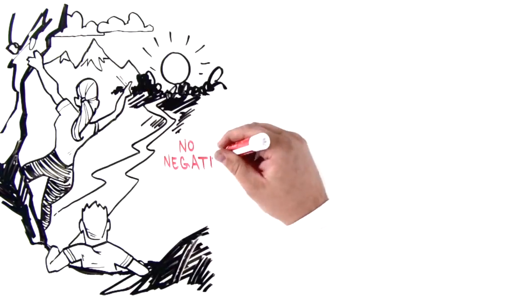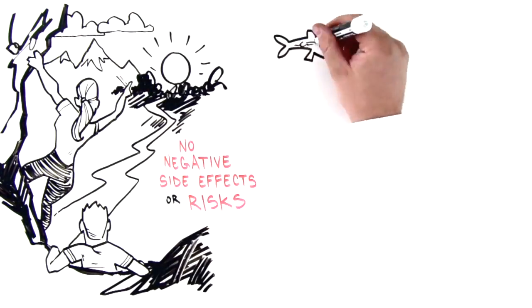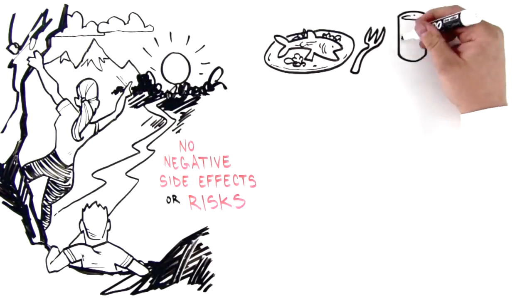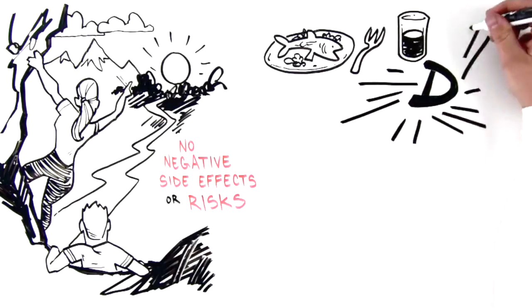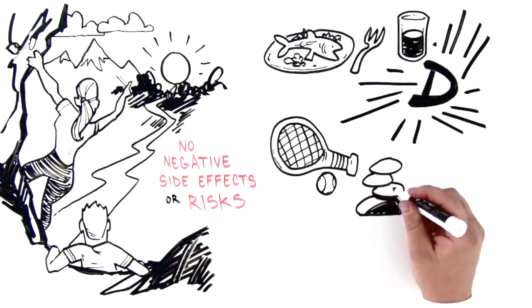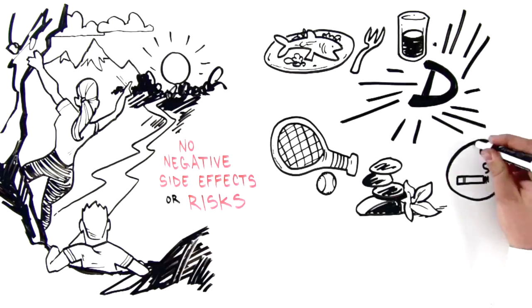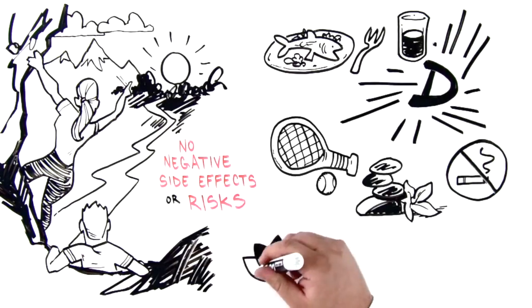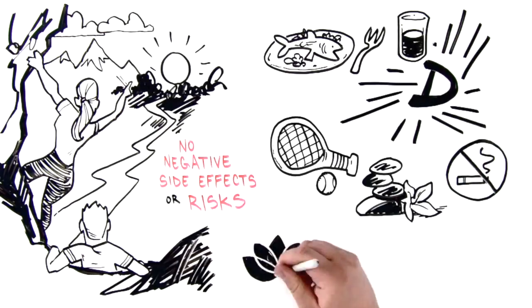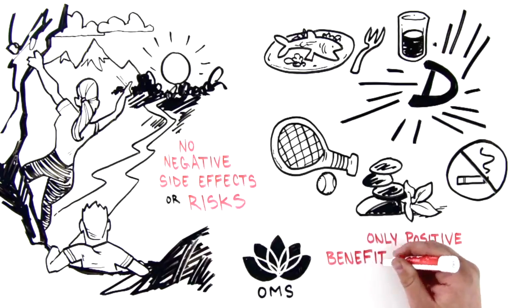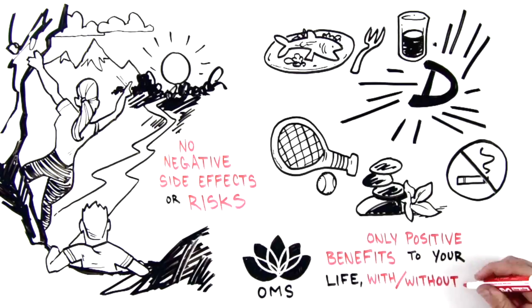Importantly, there are no negative side effects or risks from a very healthy diet, supplementing with omega-3s and vitamin D, being physically active, meditating, and not smoking. In fact, these and other essential elements of the OMS program bring only positive benefits to your life, whether or not you have MS.